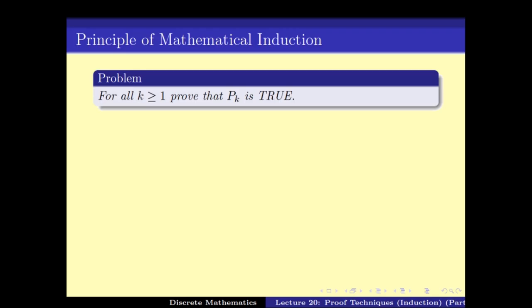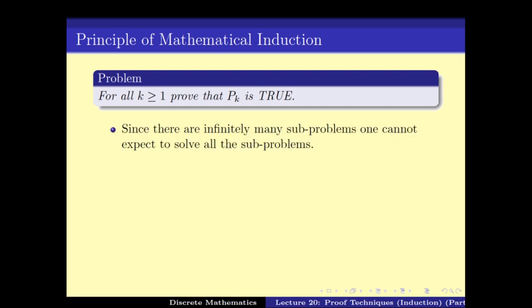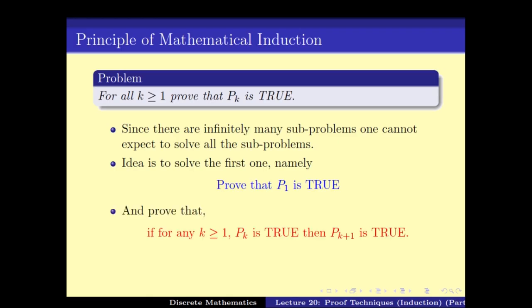There are many ways of proving this. One obvious way is to prove P1 is true, then P2 is true, P3 is true, and so on. The only problem is that there are infinitely many sub-problems, and hence one cannot expect to solve all of them. So we must come up with a technique to solve all of them at once. The idea is: first prove P1 is true, then assuming Pk is true, prove Pk+1 is true. This gives us Pn for all n.